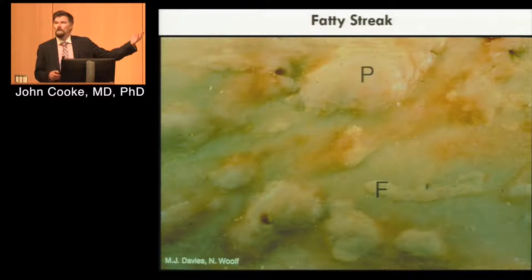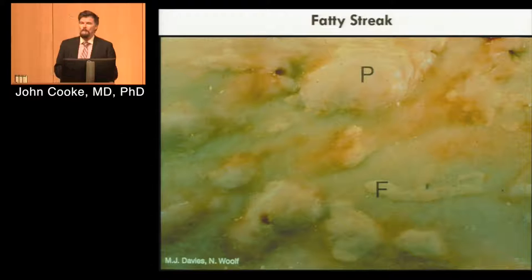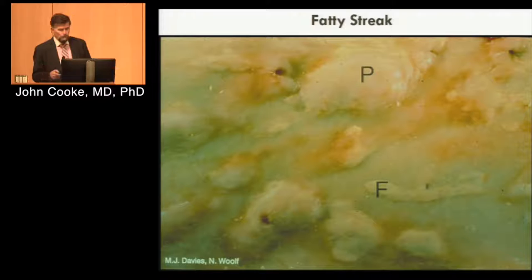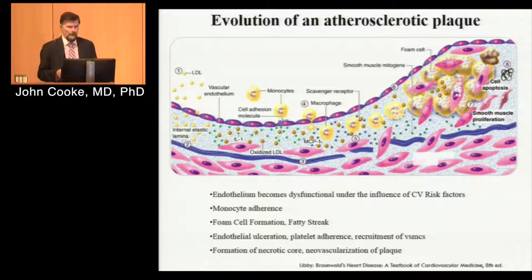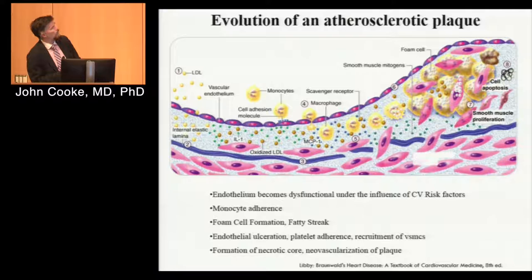Accumulations of these foam cells form the first grossly visible lesion in atherosclerosis, which is the fatty streak. These lesions are commonly seen even in young people. By the time most Western-world kids are in their teen years, they have these fatty streaks. The lesion begins with alterations in the endothelium under the influence of oxidized lipid particles and advanced glycosylation end-products in diabetes, precipitating an inflammatory process that leads to accumulation of foam cells.